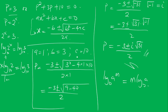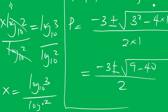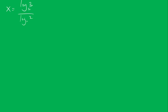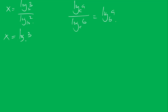Applying that rule, we have X times log 2 base 10 equals log 3 base 10. Dividing both sides by log 2 base 10, we get X equals log 3 base 10 divided by log 2 base 10. According to the change of base law of logarithms, log a base c divided by log b base c equals log a base b. Therefore, X equals log 3 base 2.